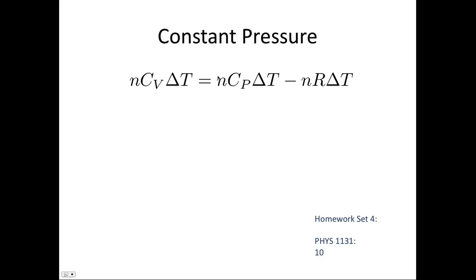And so we have nCv delta T is equal to nCp delta T minus nR delta T. All our n's and our delta T's will cancel off, giving us Cp minus Cv is equal to R, or Cv is equal to Cp minus R.